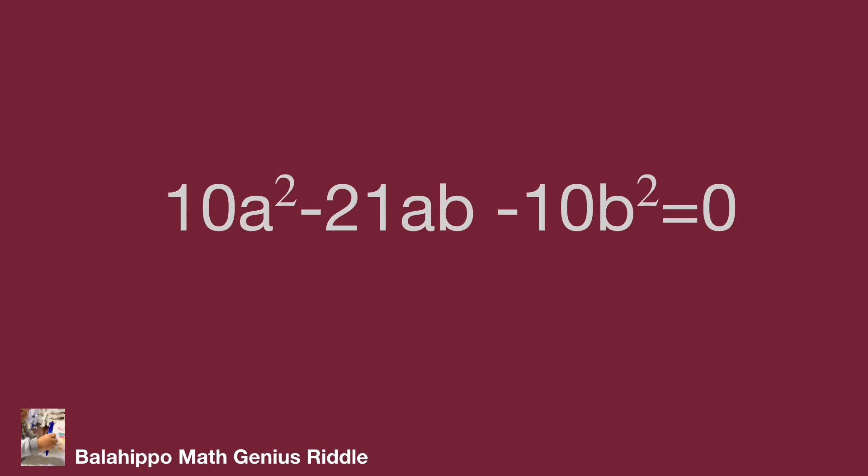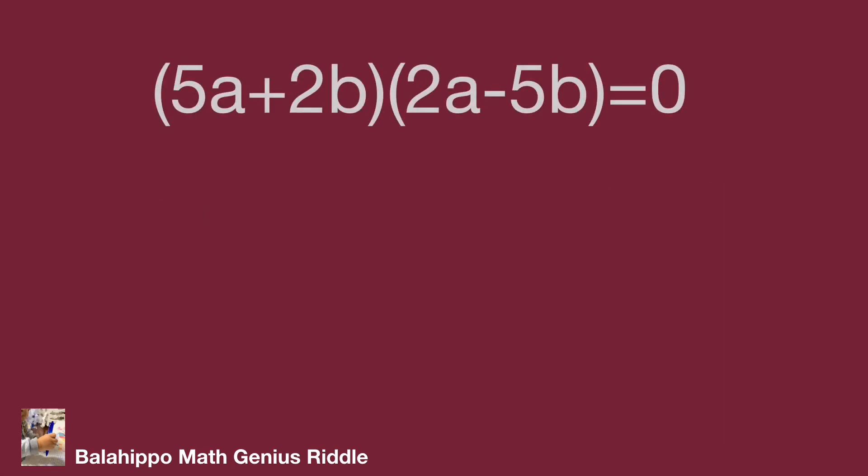Factorize to become quantity 5a plus 2b multiplied by quantity 2a plus 5b equal to 0. So 5a plus 2b equals 0, or 2a plus 5b equals 0. Then a equals negative 2 over 5 b, or a equals negative 5 over 2 b.